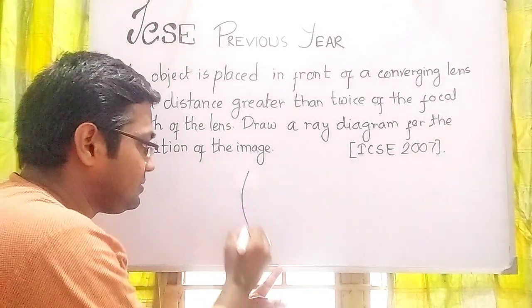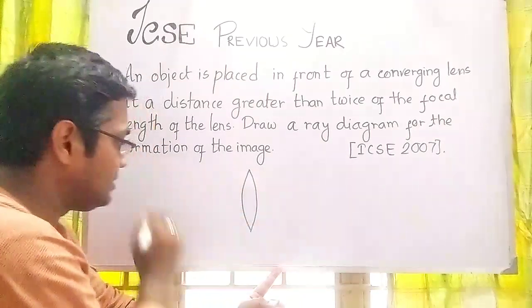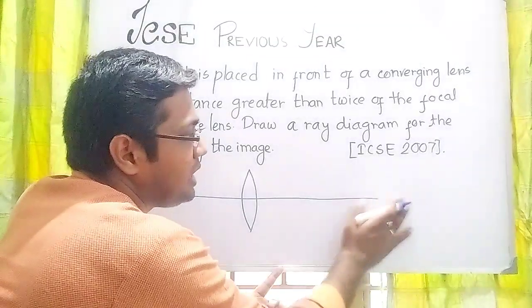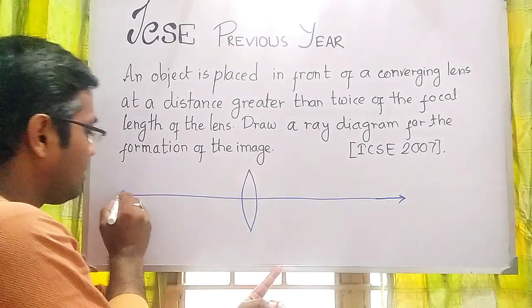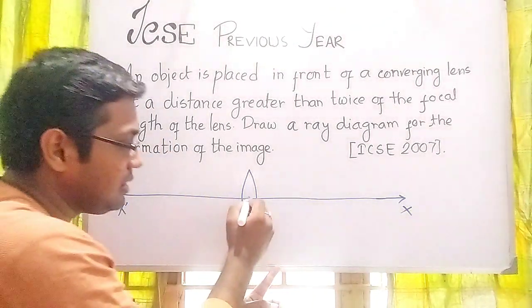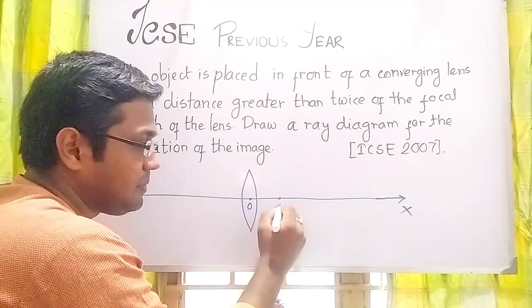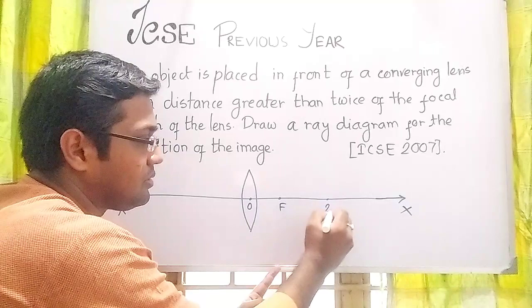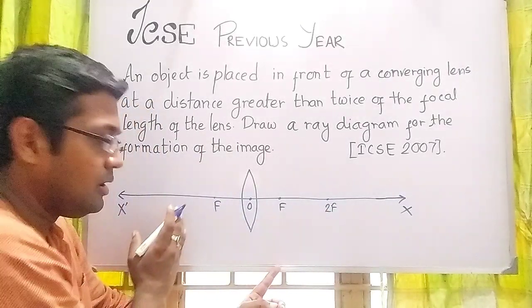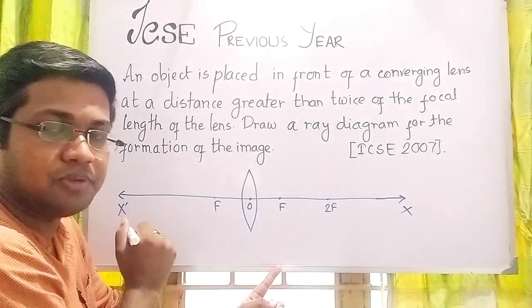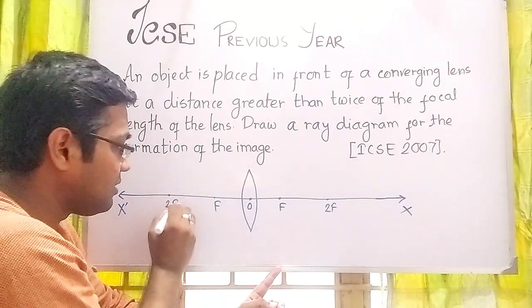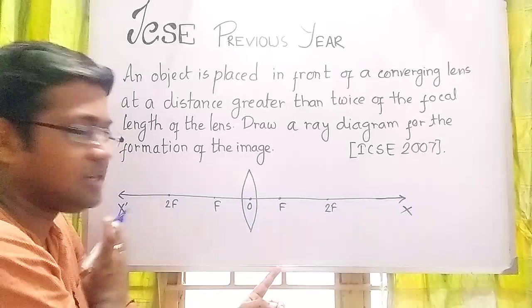Converging lens, that is a convex lens. We draw the principal axis and the geometrical attributes. Before discussing anything: optical center, focus, twice of the focus. On this side also, we draw f and 2f. We point out f and 2f on the principal axis to make the sections on the incident side, or the object side.